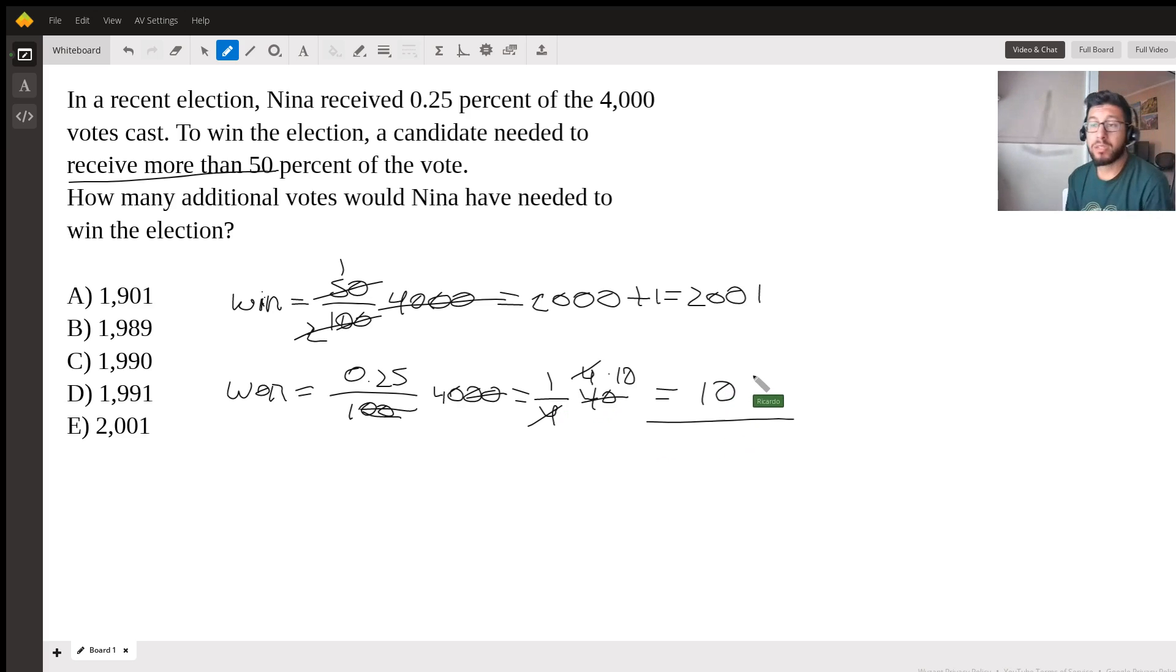And what we can do is we can subtract the difference. So she won 10, she needed 2,001 in order to win, and the difference is going to be 1,991. So that is our answer, letter D.